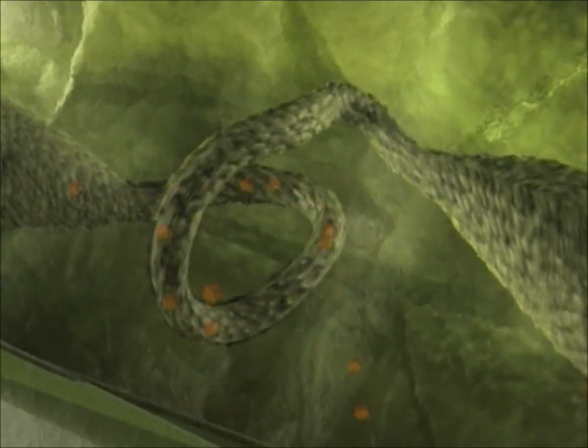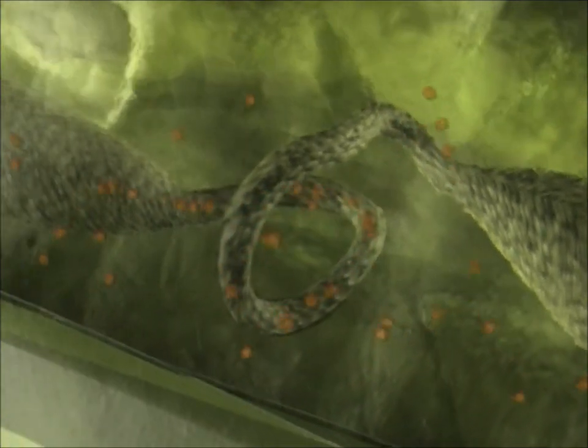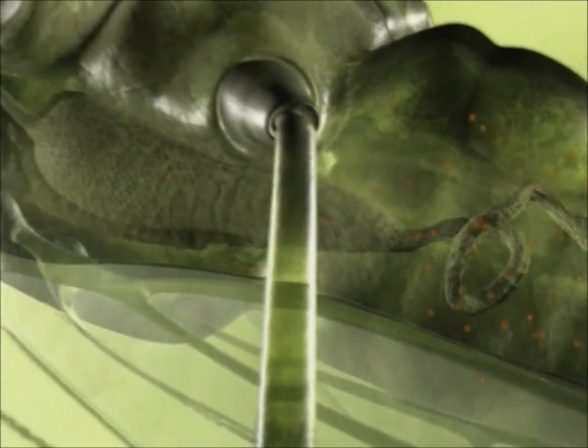The virus particles cross the lining of the midgut, and in this way enter the aphid's body fluid, its hemolymph. The virus particles circulate in the body cavity without multiplying.